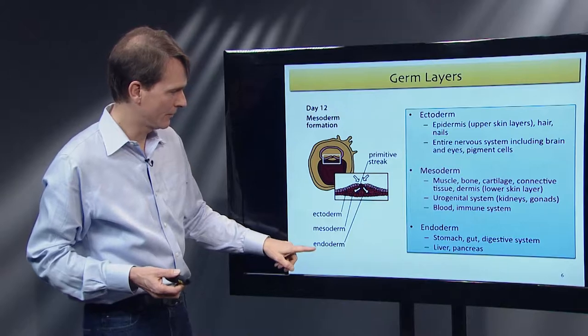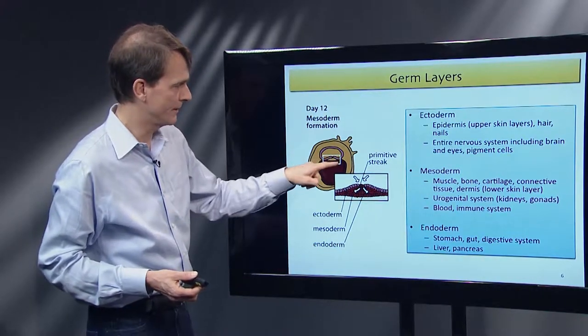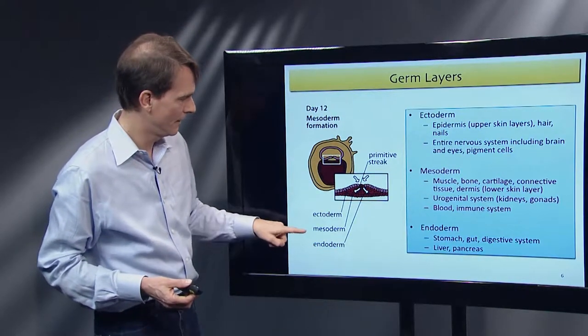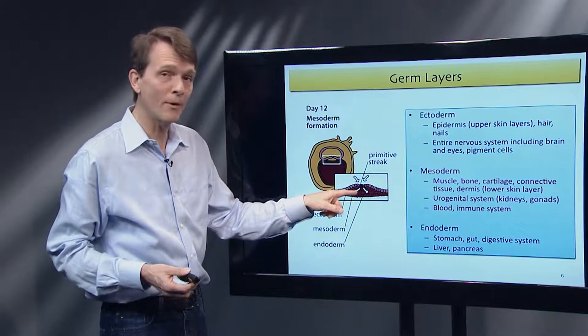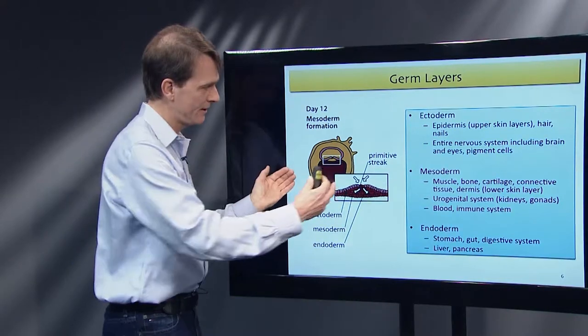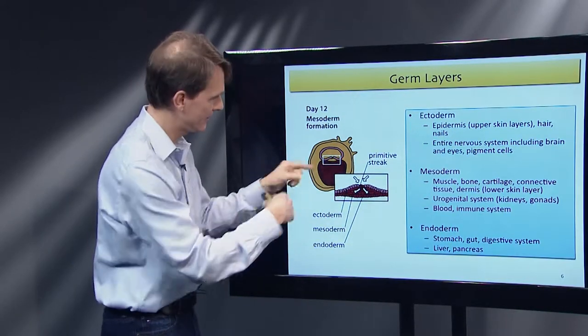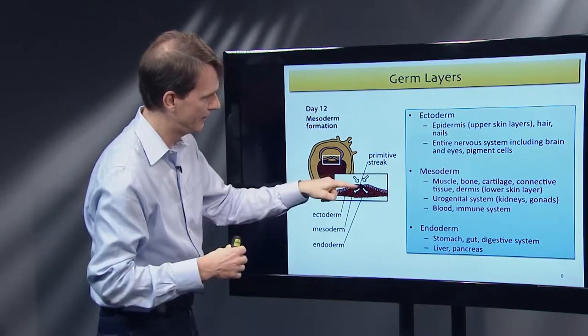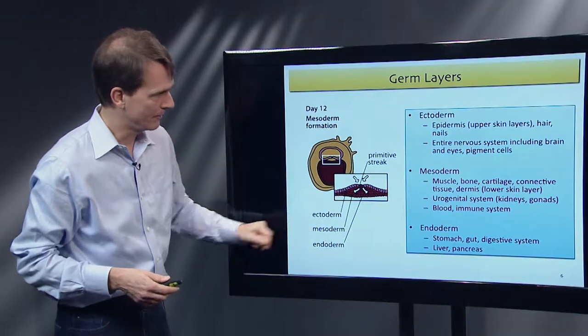Two cell layers begin to interact with one another and make a third cell layer. These are the so-called germ layers. Ectoderm and endoderm are the ones that pre-existed. Then there's mesoderm, which forms by cells migrating into a little cavity and making this germ layer.